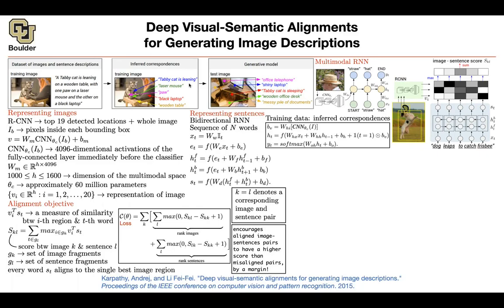A student asks: assigning certain words in the training image — like 'tabby cat' pointing back to the tabby cat — is that done using the maximum location? Like if a word activated V1 or V7 the most, you take that word and point back to the bounding box that maximized it? The instructor confirms: that's the inference part of alignment, which will be explained next session. Once that problem is solved, you have enough data to train the model from the previous paper, and more data is going to help improve performance.